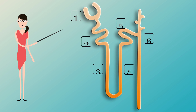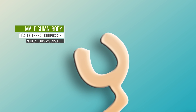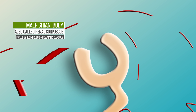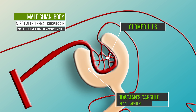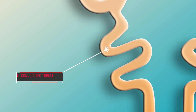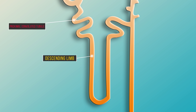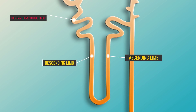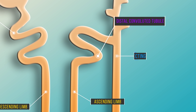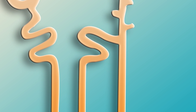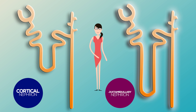Each nephron is composed of six regions, and each region has its own particular structure and function. The first region is called the Malpighian body, also known as the renal corpuscle, which comprises the glomerulus and the Bowman's capsule. The second region is the proximal convoluted tubule, followed by the descending limb of the loop of Henle. The fourth region is the ascending limb of the loop of Henle, followed by the distal convoluted tubule. Finally, the sixth region is called the collecting duct.